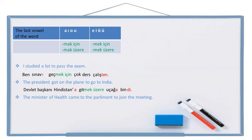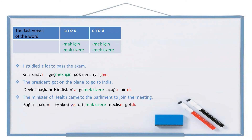Let's see one more example: The minister of health came to the parliament to join the meeting. Again, this is not daily speech — it's taken from some news. So I'm going to use mak üzere or mek üzere. Health — sağlık. Minister — bakan. The minister of health — sağlık bakanı. Meeting — toplantı. To the meeting — toplantıya (two vowels cannot be together, so I need a buffer letter). Join — katıl. To join — katılmak üzere. Parliament — meclis. To the parliament — meclise. Come — gel. Came — geldi. Sağlık bakanı, toplantıya katılmak üzere meclise geldi.